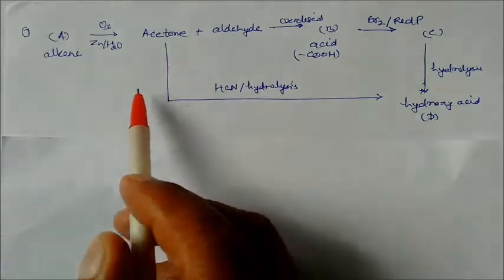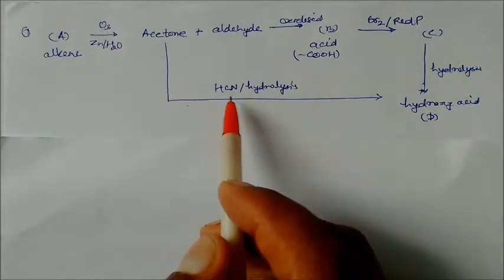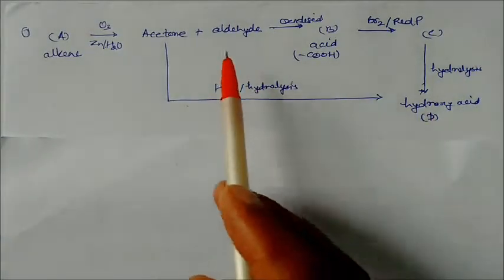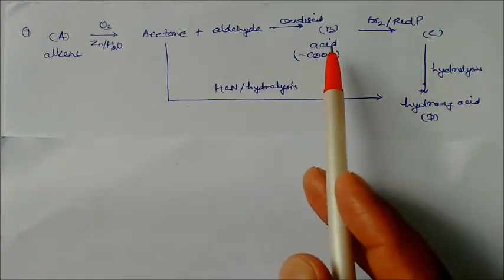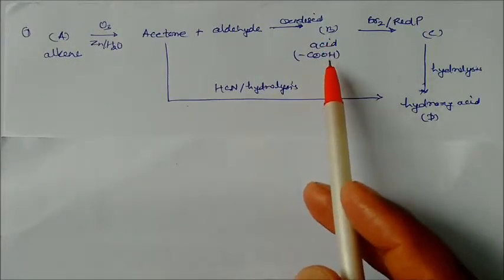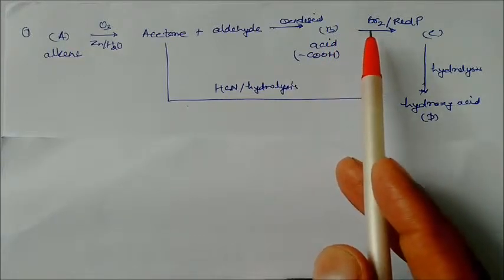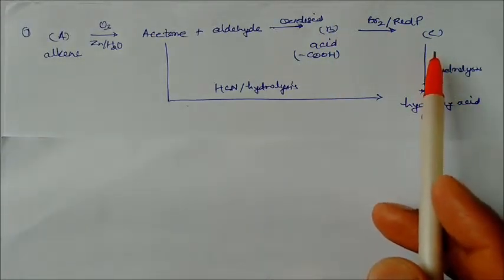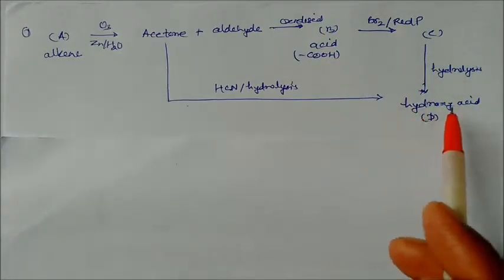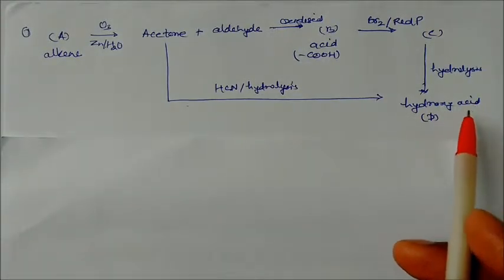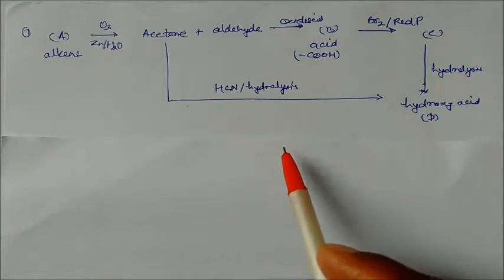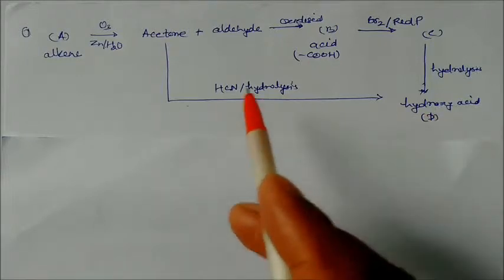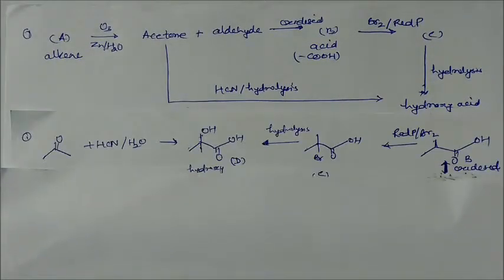This acetone on hydrolysis in presence of weak acid HCN will give a hydroxy acid. The aldehyde is oxidized and converted to a carboxylic acid B. B reacts with Br2 in presence of red phosphorus to give C, and C on hydrolysis gives the product hydroxy acid. From acetone we can get this hydroxy acid product.